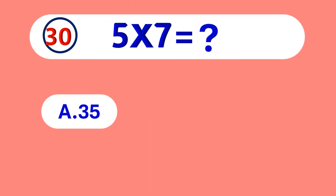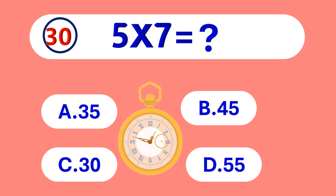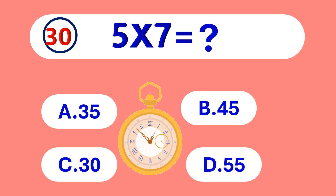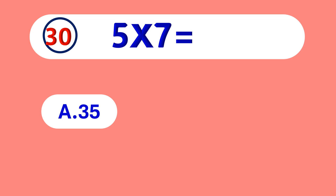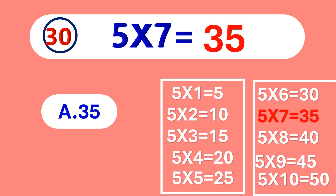5 times 7 is equal to... 35. 5 times 7 is 35.